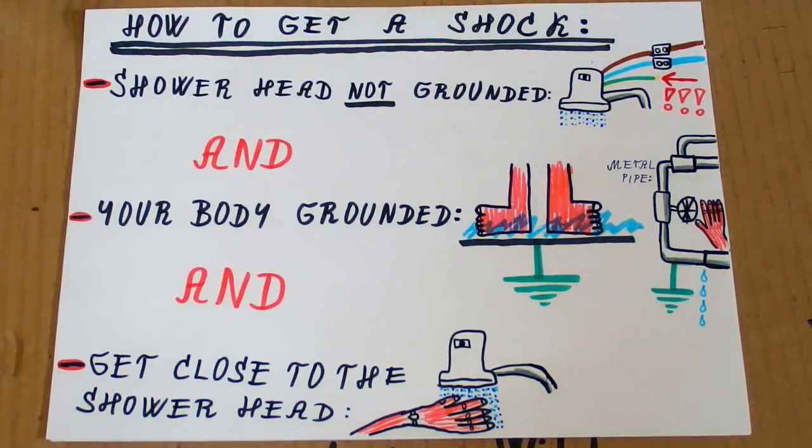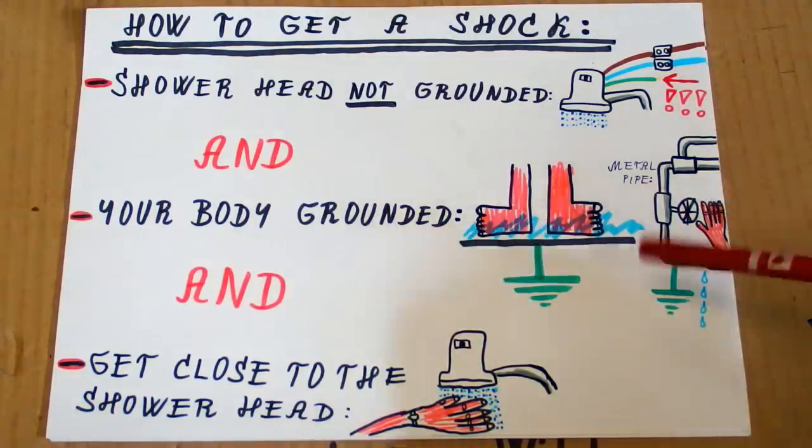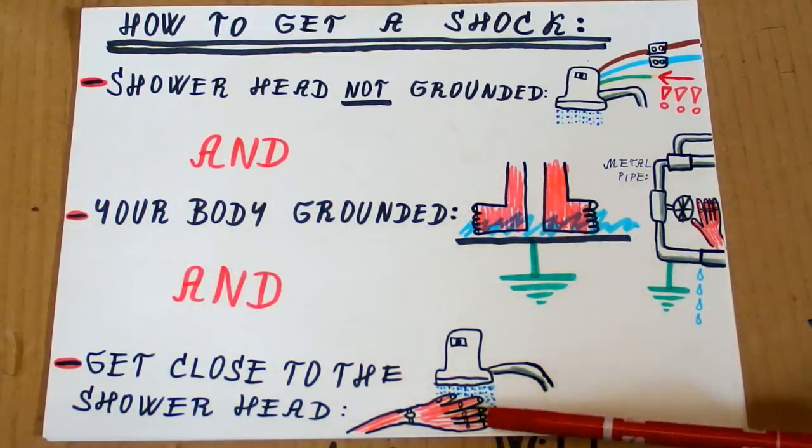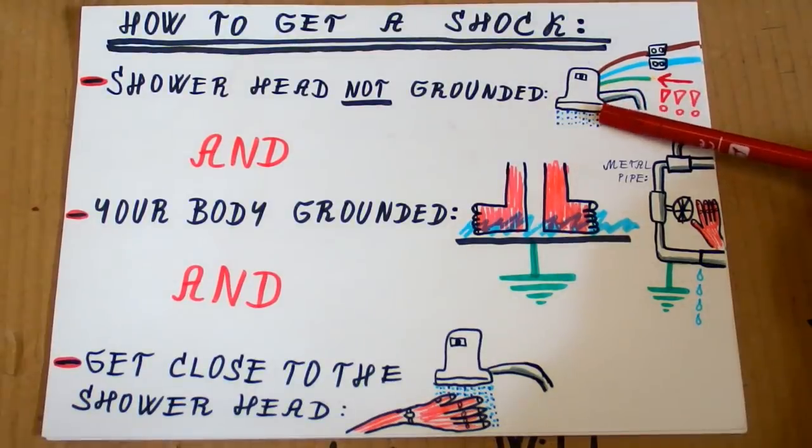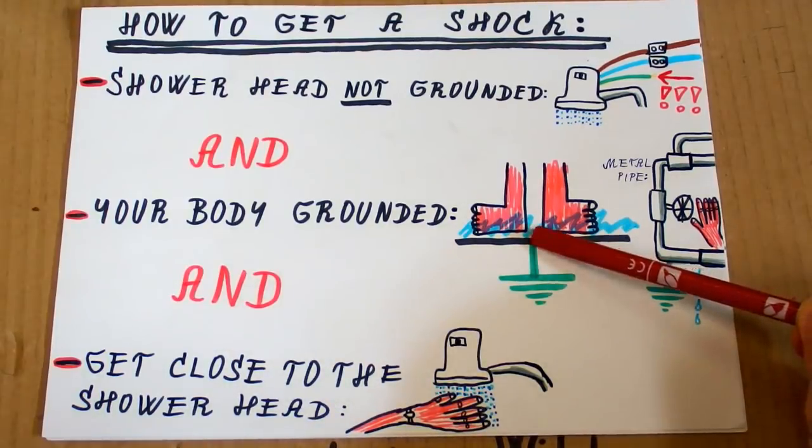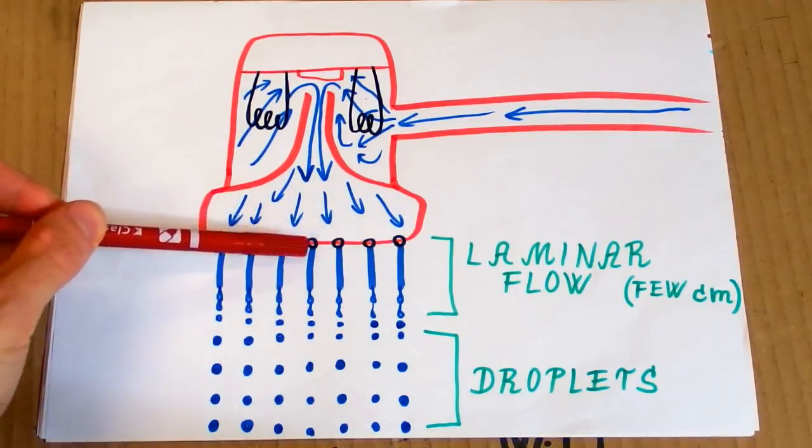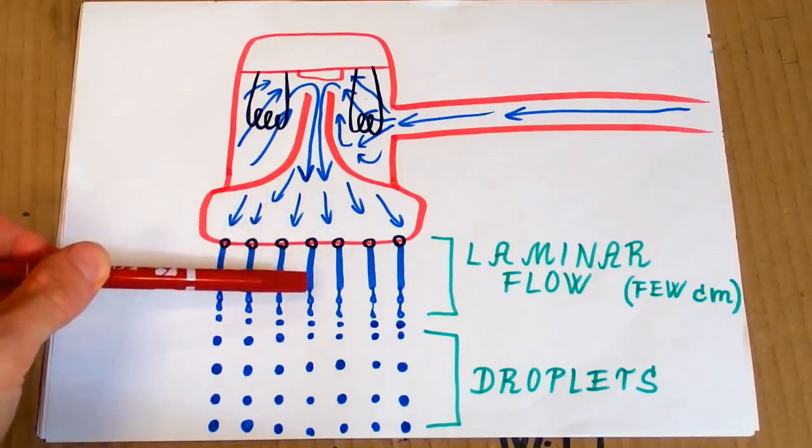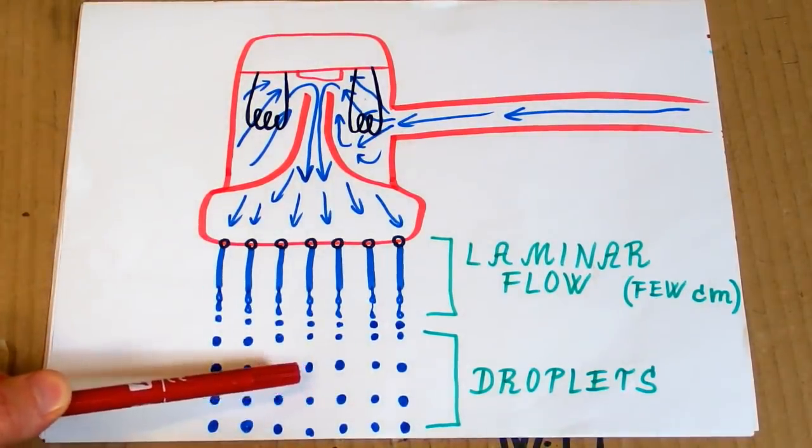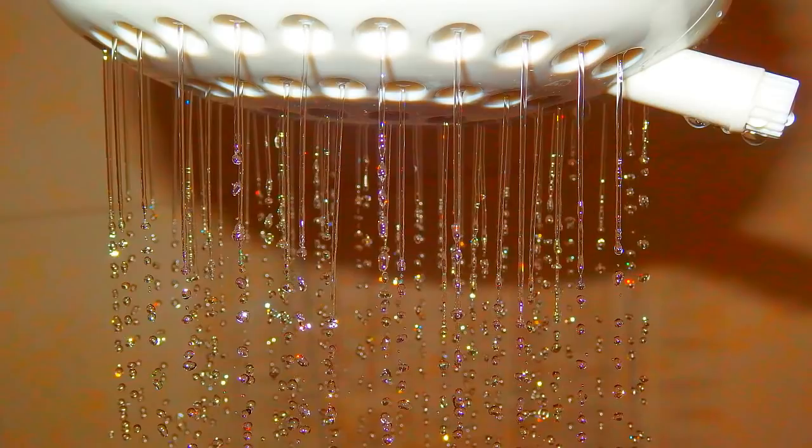So it seems that to get a shock three circumstances are necessary. The shower head is not grounded. And your body is grounded by for example standing on something grounded or touching a grounded metal pipe. And also to get very close to the shower head. If the shower head is not grounded there is a high voltage at the nozzles. And the circuit is completed from the shower head to the ground. And it seems like that. To get a shock you have to get very close to it. Because the water comes out from it as a laminar flow. But it goes on for just a few centimeters. And then the water breaks into individual droplets. And of course like this it can't conduct any current. So I took a picture of it with a flash. And because a camera flash is very short you can basically see it frozen in time.